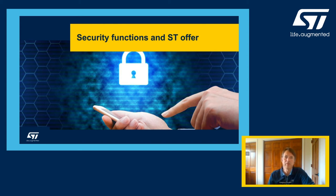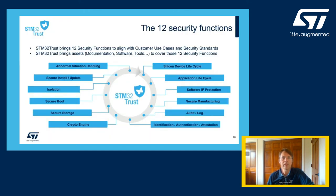Based on these common use cases, we've defined a list of security functions which we have mapped across our product portfolio. The STM32 Trust brings 12 security functions to align with customer use cases and security standards. The STM32 Trust brings the documentation and software tools to cover all 12 security functions: abnormal situations handling, secure boot and secure install update, isolation, secure storage, crypto engine, silicon device lifecycle, application lifecycle, software IP protection, secure manufacturing, audit logs, identification, authentication, and attestation.